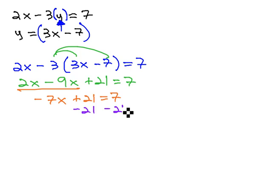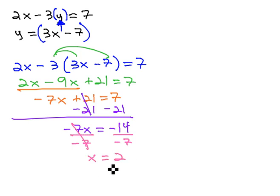Subtract 21 from both sides. Negative 7x equals negative 14, and finally divide both sides by negative 7, and we now know that x is equal to 2.